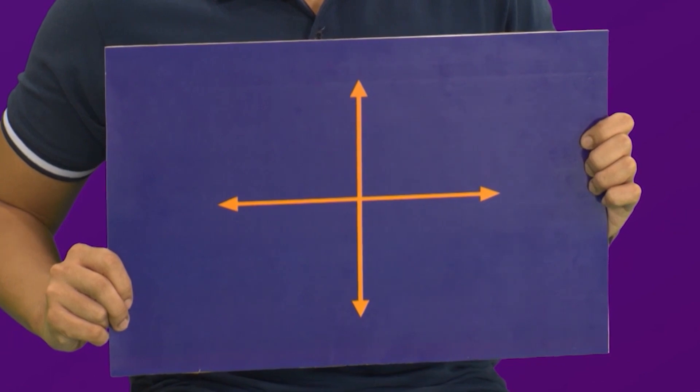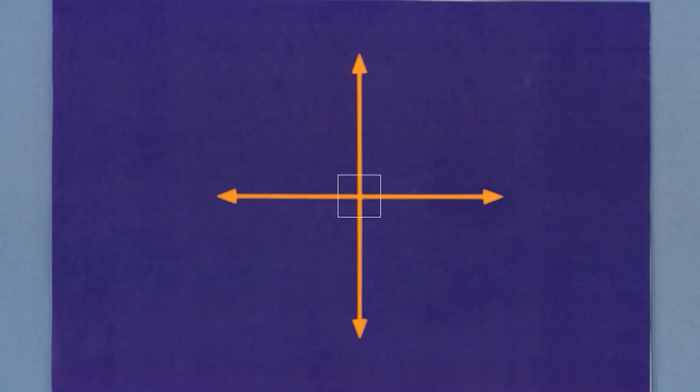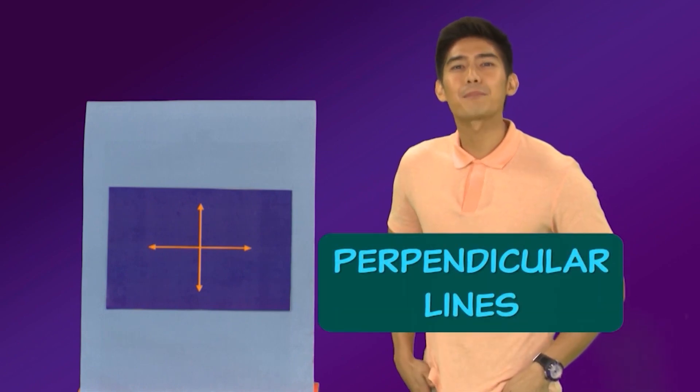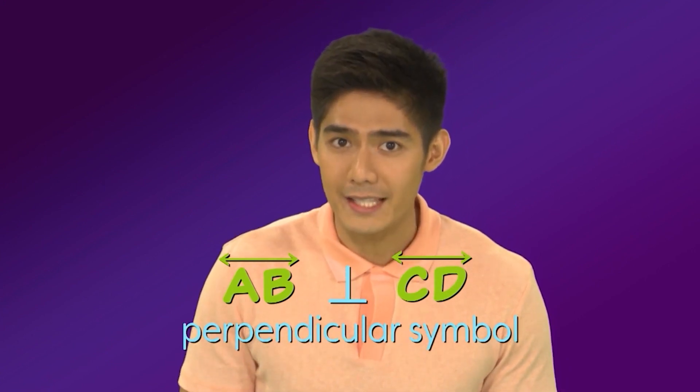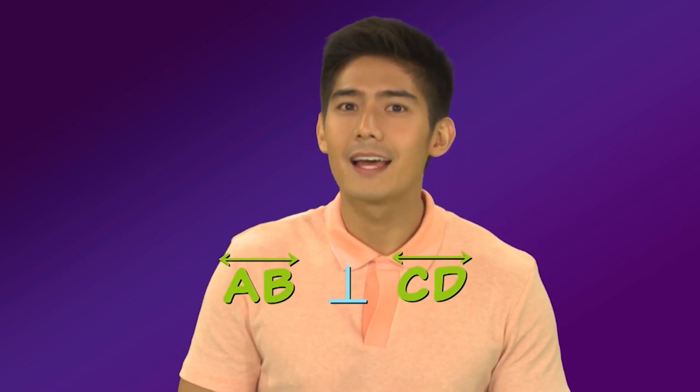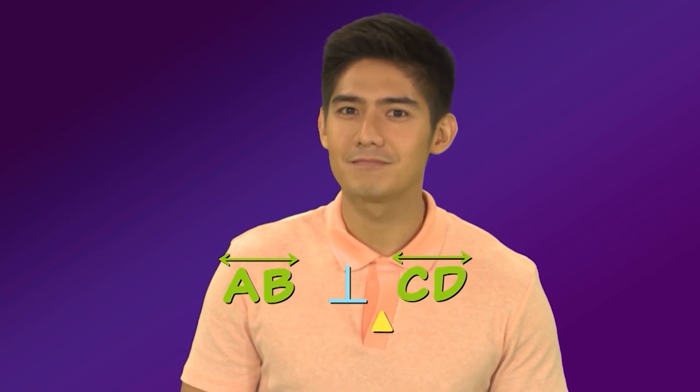Pero ito. Alam nyo ba na may isang uri ng intersecting lines na espesyal o katangi-tangi? Espesyal? Pagmasdan yung mabuti yung ginuhit na intersecting lines ni Vic. Anong iba sa lines niya, Kuya Robby? Kakaiba nga ang intersecting lines ni Vic dahil pare-pareho ang mga kanto o corners nito. Pare-parehong square corners. Kapag ganito ang intersecting lines, ang tawag sa kanila ay perpendicular lines. Kapag sinusulat ito, ginagamit ang simbol para sa perpendicular lines. Kung babasahin, line AB is perpendicular to line CD.